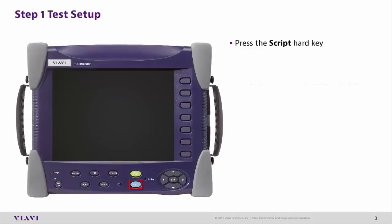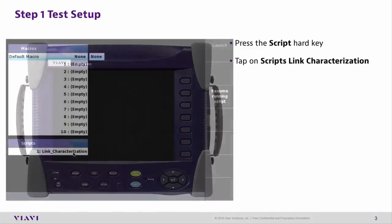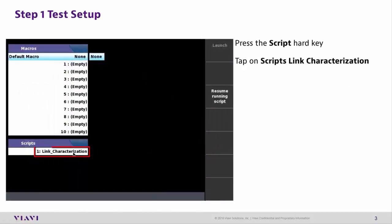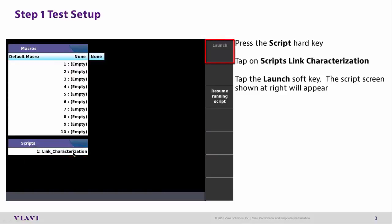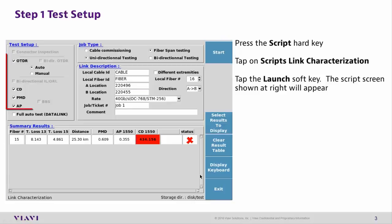Step 1: Test Setup. Press the Script Hard key, then tap Scripts Link Characterization. Tap the Launch soft key.